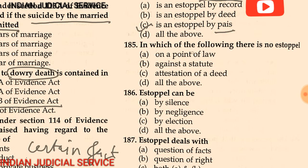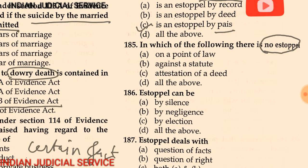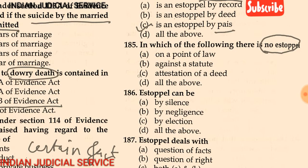Question 185: Which of the following is NOT an estoppel? Options include: (A) a point of law, (B) against the statute, (C) attestation of a deed, (D) all of the above. The answer is: attestation of a deed.